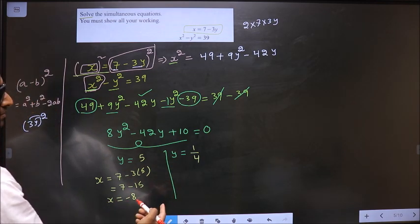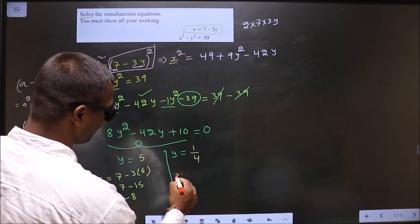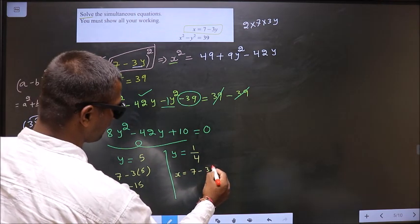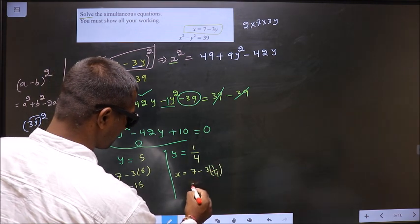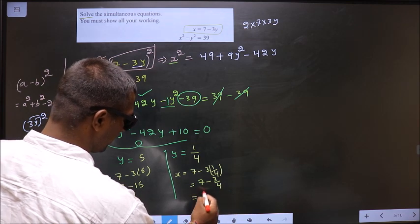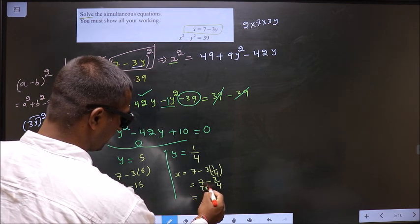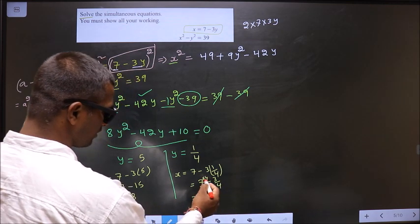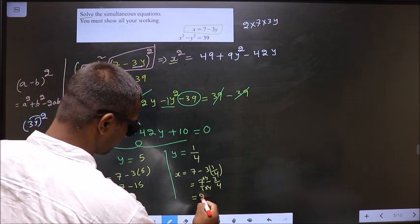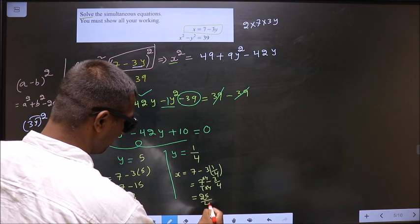Now, replace 1 by 4. We get x equal to 7 minus 3 times of 1 by 4. So, that is 7 minus 3 by 4. Now, if I take LCM into 4 into 4. So, 28 minus 3 is 25. So, we get 25 by 4.